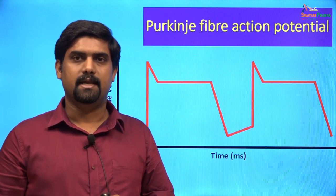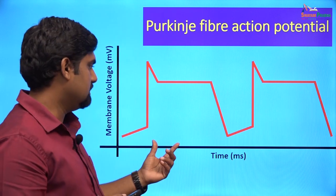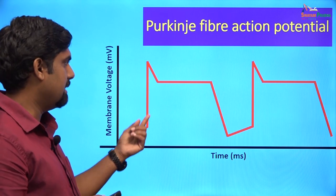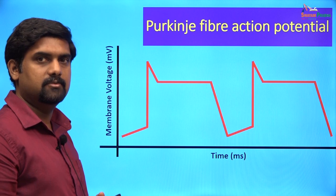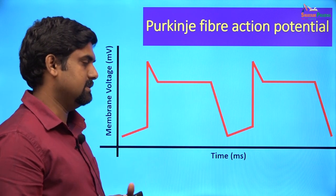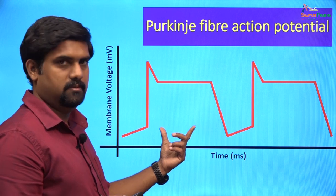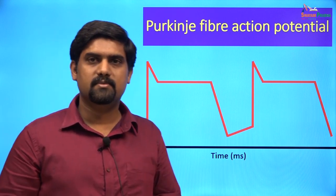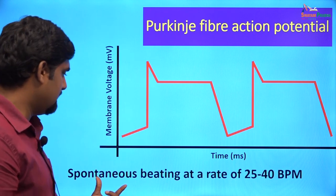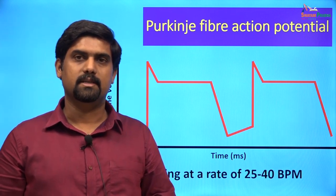The action potential spreading from the AV node can reach the Purkinje fibers, which can produce a Purkinje fiber action potential. This has a diastolic depolarization phase similar to the AV node and SA node, followed by a rapid depolarization phase caused by the entry of sodium ions, an early repolarization phase, a plateau phase, and a delayed repolarization phase. Another peculiar feature of this action potential is that its duration is very long. If the SA node and AV node are diseased and dysfunctional, the Purkinje fibers can spontaneously beat at about 25 to 40 beats per minute, causing ventricular contraction — this rhythm is called the idioventricular rhythm.